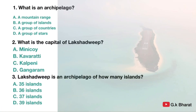Question number one. What is an archipelago? Option A: A mountain range. Option B: A group of islands. Option C: A group of countries. Option D: A group of stars. Your correct answer is option B — a group of islands.